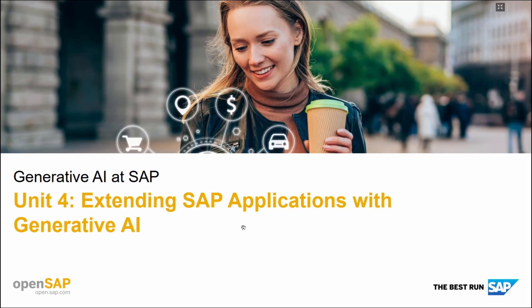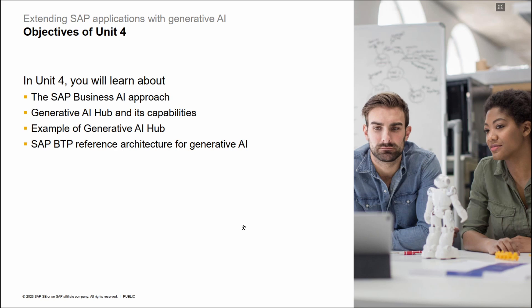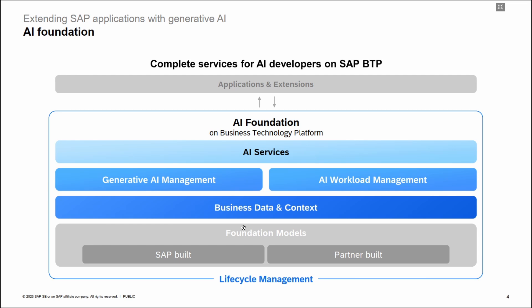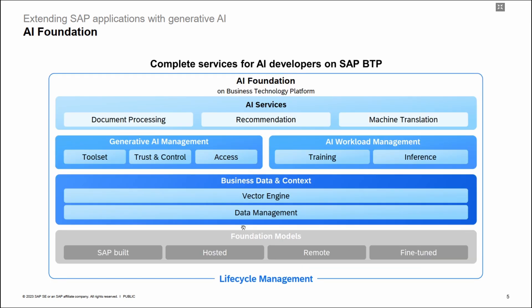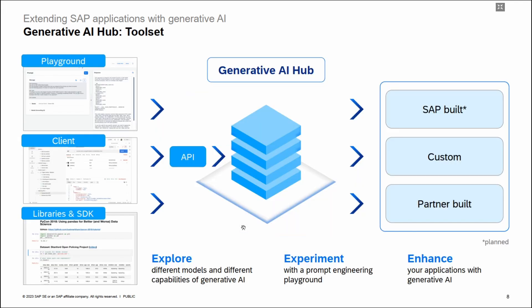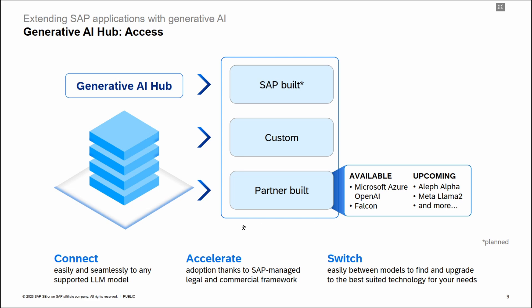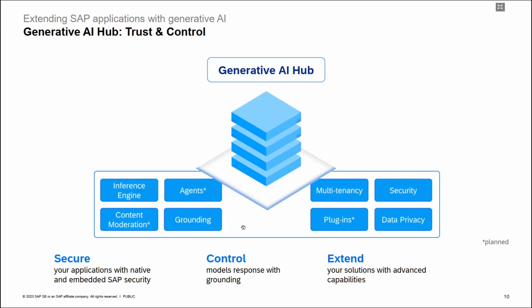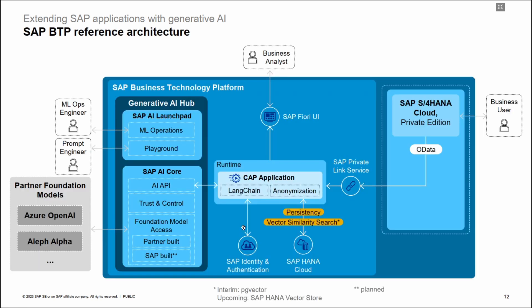Unit 4 — Extending SAP Applications with Generative AI — explores the SAP Business AI approach, focusing on the Generative AI Hub and its capabilities within the SAP ecosystem. Participants will gain an understanding of how SAP implements generative AI solutions and their relevance to business processes, with examples illustrating practical applications. Learners will also explore the SAP Business Technology Platform (SAP BTP) reference architecture for generative AI, offering insights into the infrastructure required to integrate generative AI capabilities seamlessly into SAP environments.